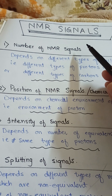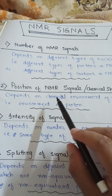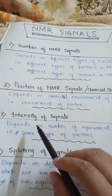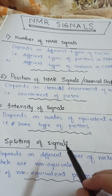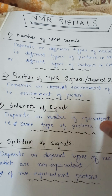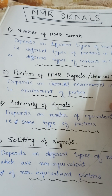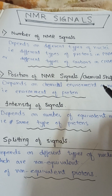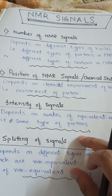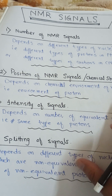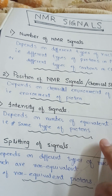For NMR signals, we should know four parameters: the number of NMR signals, the position of NMR signals or chemical shift value, the intensity of NMR signals, and the splitting of NMR signals. In our next video, we will explain the number of NMR signals and the position of NMR signals — that is, the chemical shift value — and after that we will discuss intensity and spin-spin splitting. So in our next two videos we will discuss all four types of NMR signal parameters. Thanks for watching.